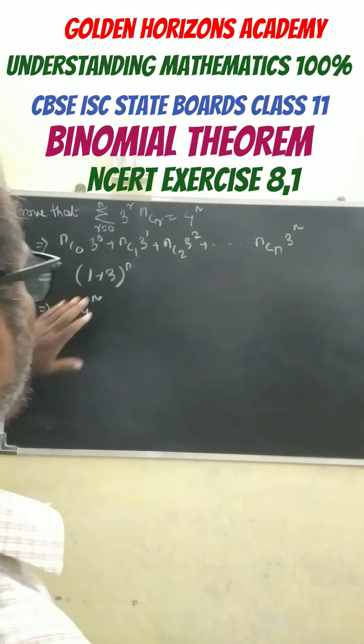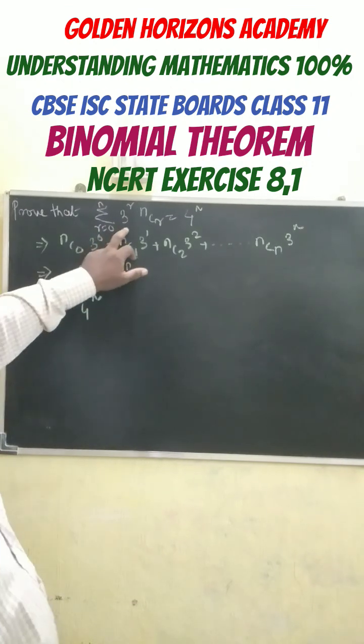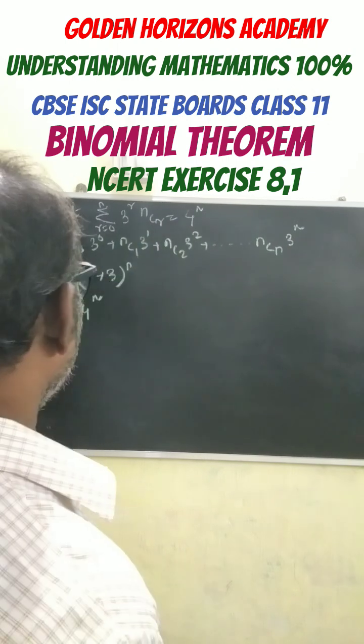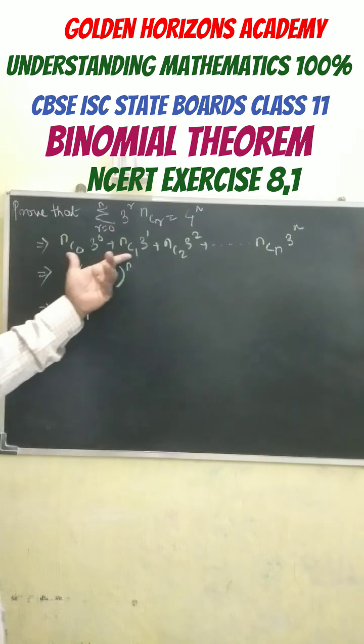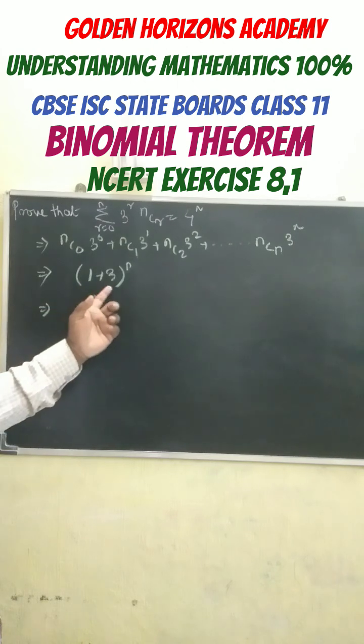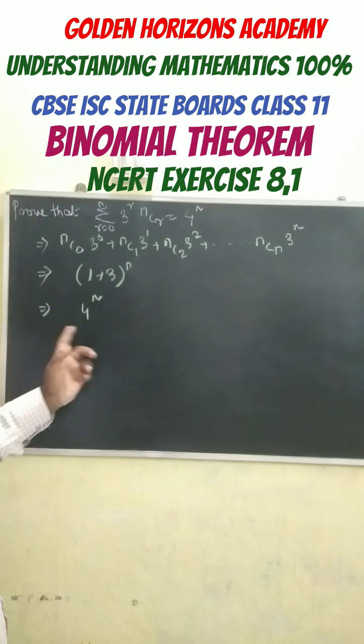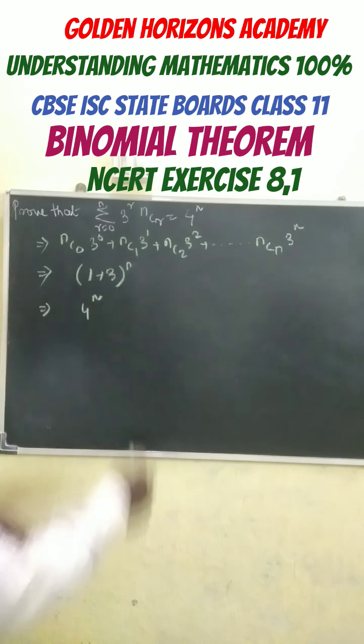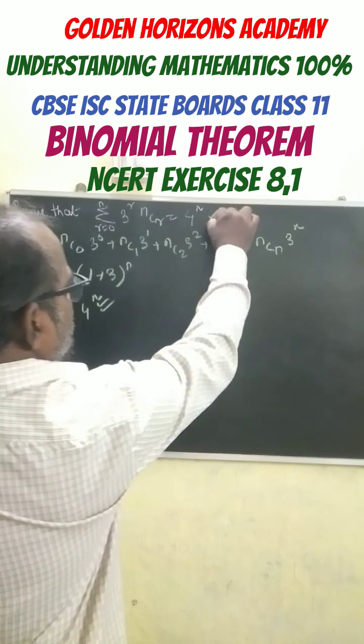This is one more question from NCERT, the summation of k to the power of r, NCR equals to 4 to the power of n, we have to prove that. At first, we do the simplification. After simplification, it seems to be 1 plus 3 to the power of n, and hence it is equals to 4 to the power of n.